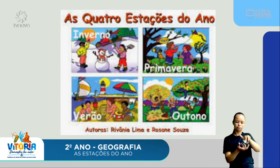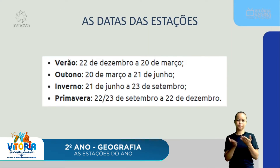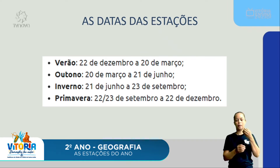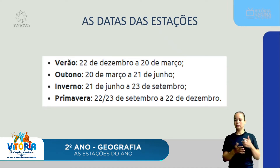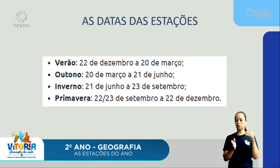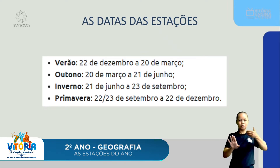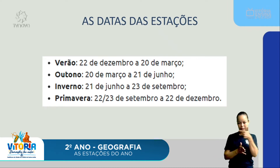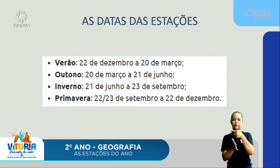As quatro estações são inverno, primavera, verão e outono. As datas dessas estações, lembrando que são referentes ao Brasil: o verão vai de 22 de dezembro a 20 de março; o outono de 20 de março a 21 de junho; o inverno de 21 de junho a 23 de setembro; e a primavera de 22 a 23 de setembro a 22 de dezembro.